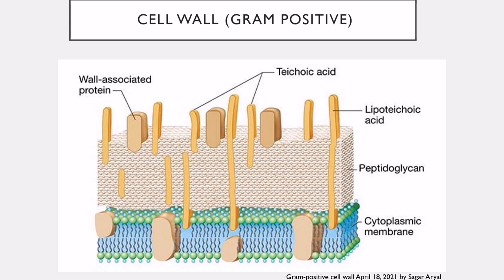In gram positive bacteria specifically, there are two additional structures present in the peptidoglycan: lipoteichoic acid and teichoic acid. Peptidoglycan is present in both gram positive and negative bacteria, but only gram positive bacteria have these. They are homologous to the LPS present in the outer membrane of gram negative bacteria. Lipoteichoic acid extends down to the cytoplasmic membrane, while teichoic acid is present only in the upper portion of the peptidoglycan. Lipoteichoic acid, analogous to Lipid A, activates macrophages to produce interleukin-1, interleukin-6, and tumor necrosis factor, causing sepsis, fever, blood clots, hypertension, and vasodilation.